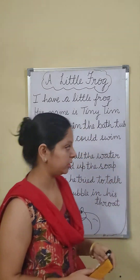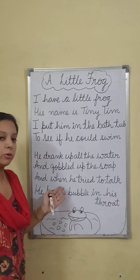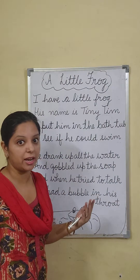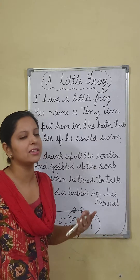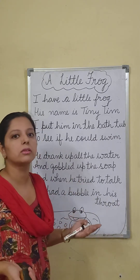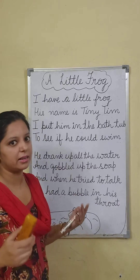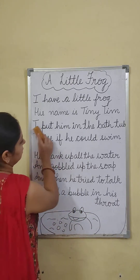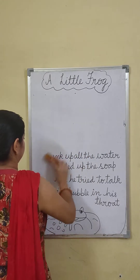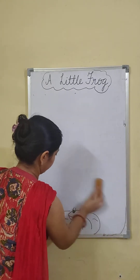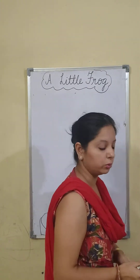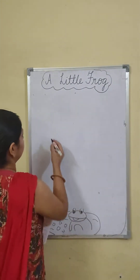Let's solve the comprehension now. Ab poem samajh aa gayi hai, ab isme se kuch questions pooche jaayenge and you will answer them. This is called a comprehension — jab hum kuch padke uske questions ki answers dete hai, that is a comprehension. On the very next page of your book, it is page 42, there is a fill in the blanks given.